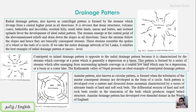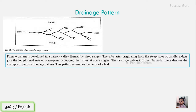The main controlling factor for the annular pattern is topography plus lithology (hard and soft rock alternation). The pinnate pattern is developed in a narrow valley flanked by steep ranges. The tributaries originate from the steep sides of the parallel ridges and join the longitudinal master consequent occupying the valley at an acute angle. The drainage network of the Narmada River denotes the example of a pinnate drainage pattern, and this pattern resembles the vein of a leaf.